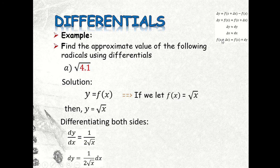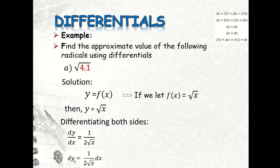The principle is: f of x plus delta x equals f of x plus dy. So we need to express the given square root of 4.1 as f of x plus delta x — breaking it into two parts — where dy can be calculated by differentiating the given function and substituting. Our square root of 4.1 is approximately equal to f of x plus delta x.